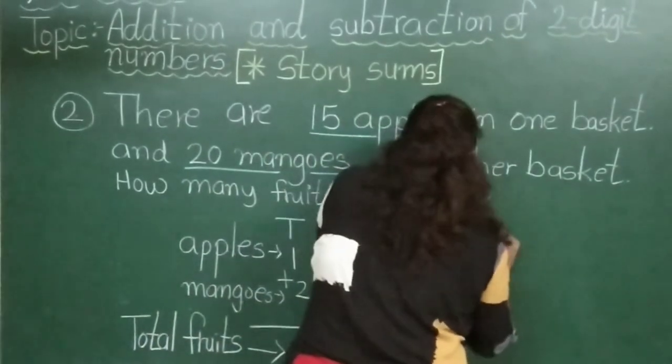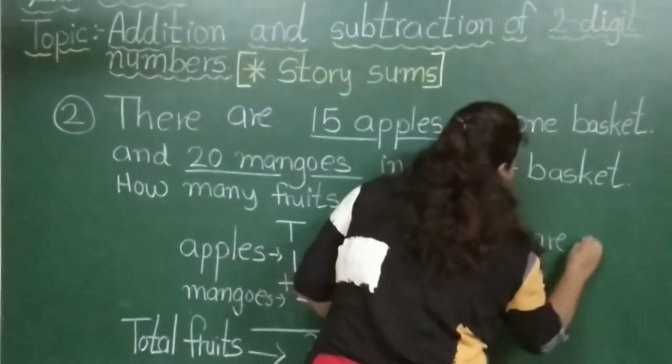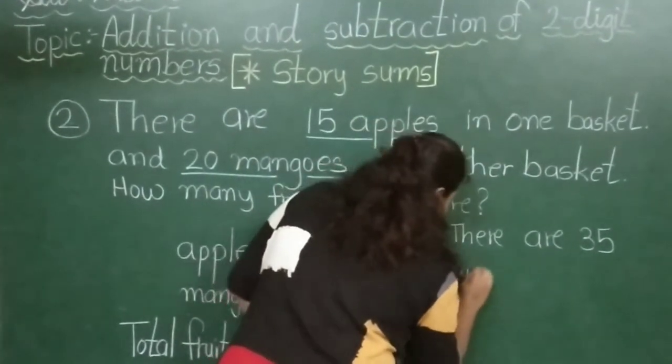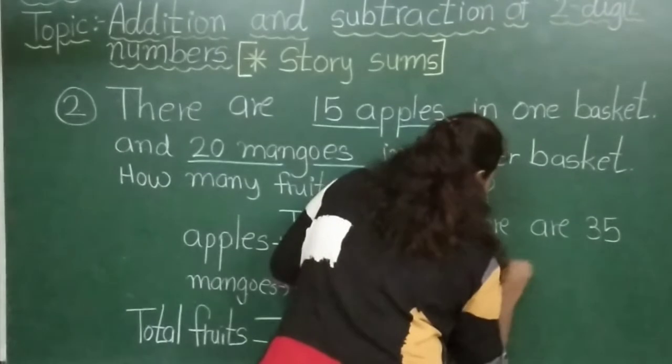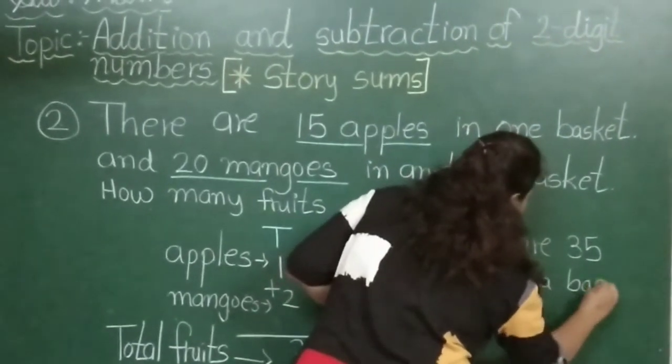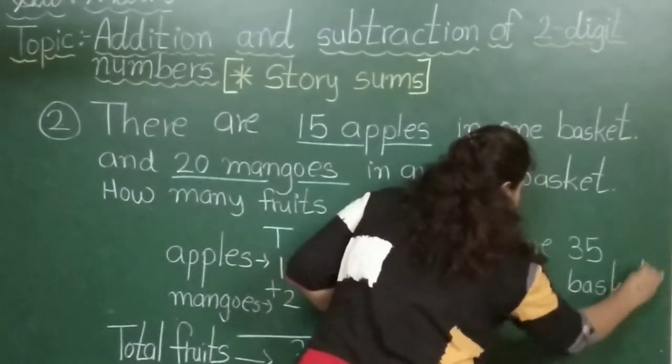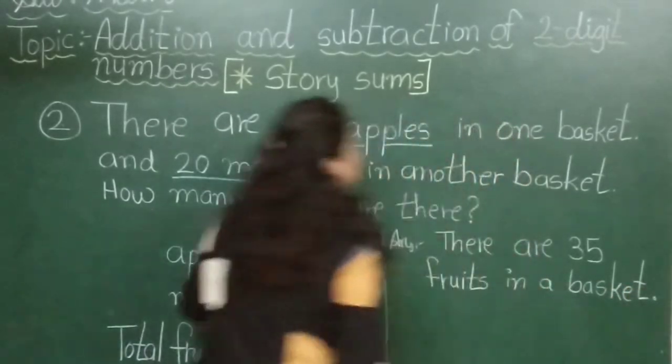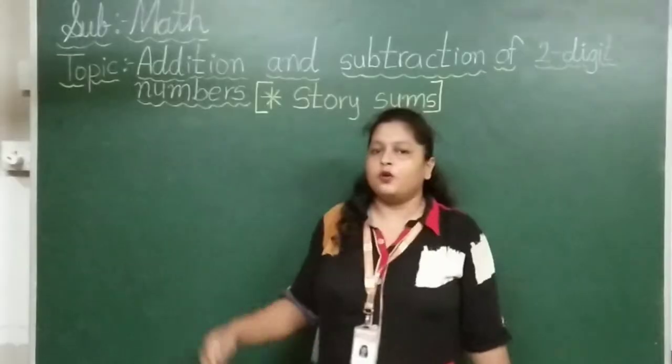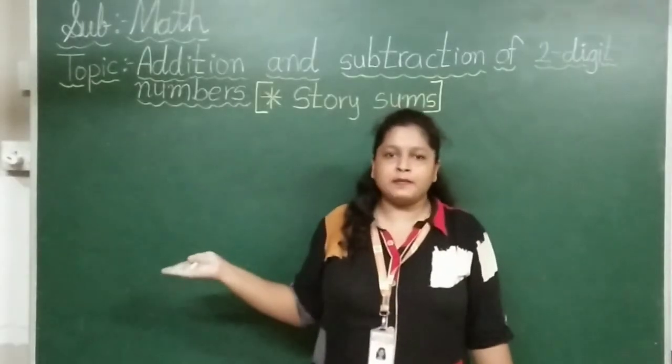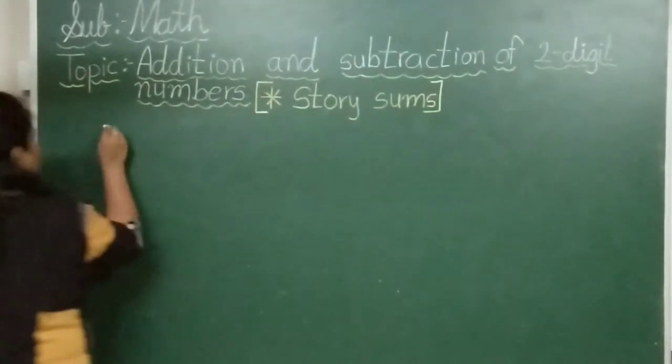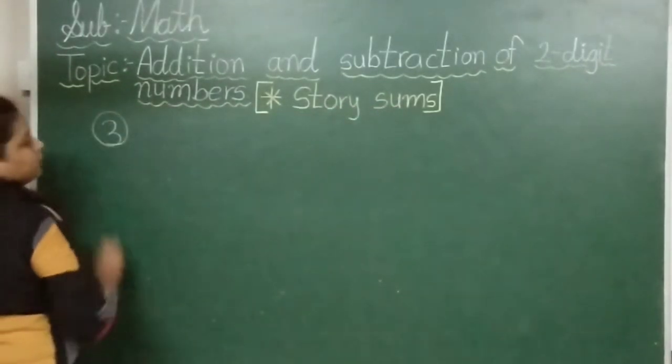There are 35 fruits in the basket. I hope you understood this concept. So let's see our next example. Now start, write number 3.